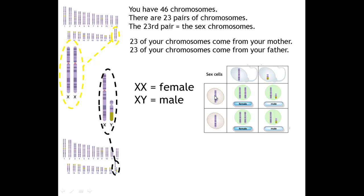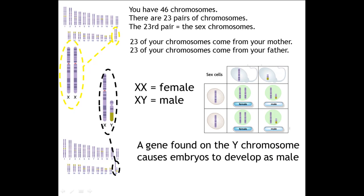All egg cells must carry the X chromosome, and it is on the Y chromosome that there is a gene that basically determines that the embryo will turn into a male. So if you receive two X chromosomes, this gene is not present and therefore the embryo continues to develop as a female.